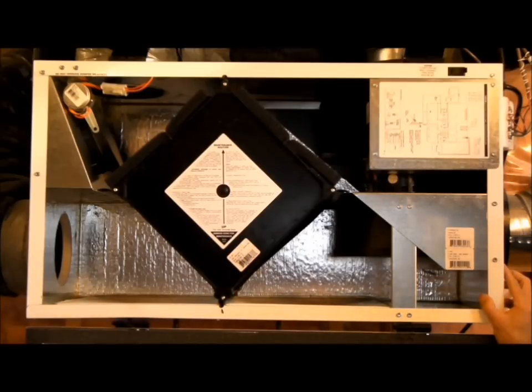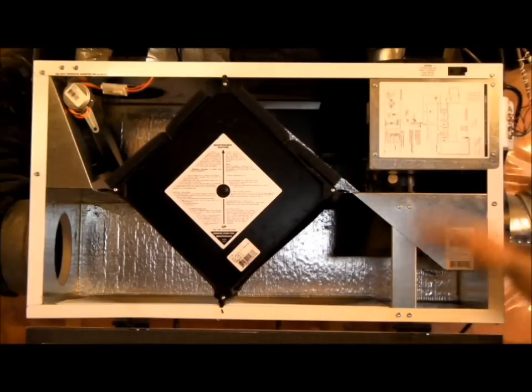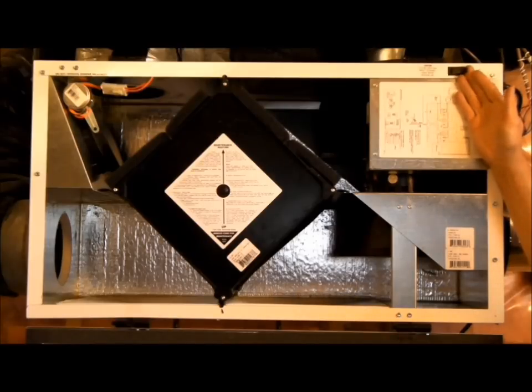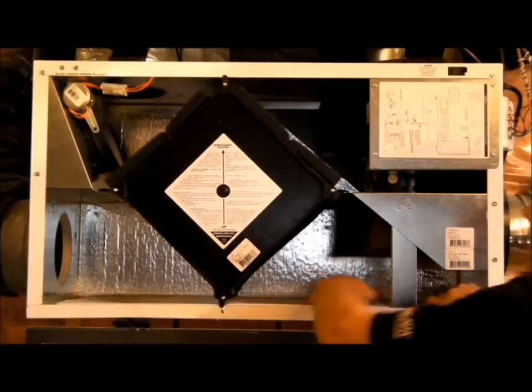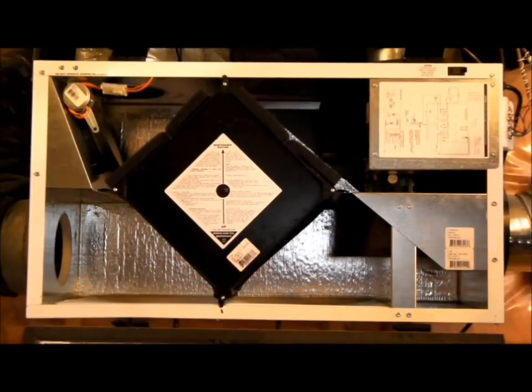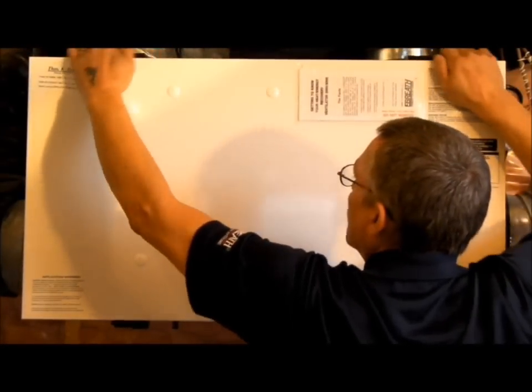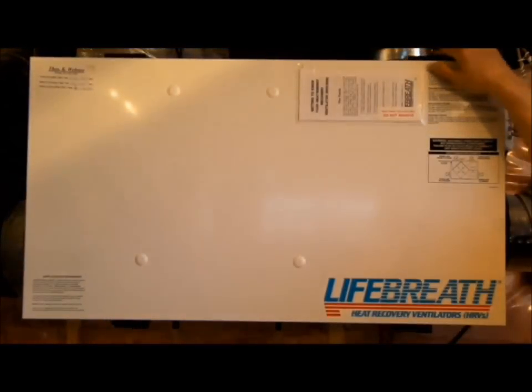Now, when it comes to maintaining your HRV, you should never have to unplug the system. This is your kill switch here. Once I drop the door down, this lever will rise, and all power has been disconnected from the unit. You are safe to put your hands in without somebody accidentally turning it on from upstairs. Close the door. Push down the clamps, and you are good to go.